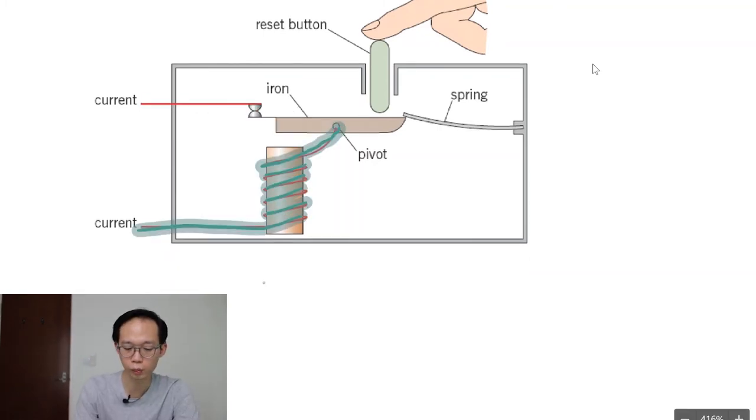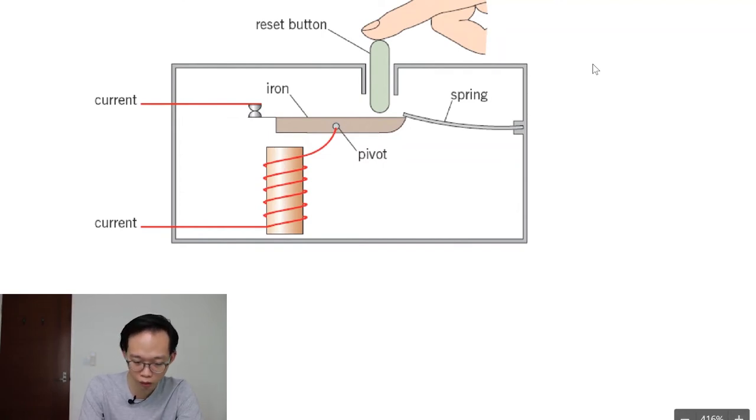So as we have learned from a previous chapter on electromagnetism, whenever we have a current that's flowing around an iron core like this in a solenoid arrangement, it means that this iron core will become an electromagnet. And so it will exert an electromagnetic force on the iron rod here like this.